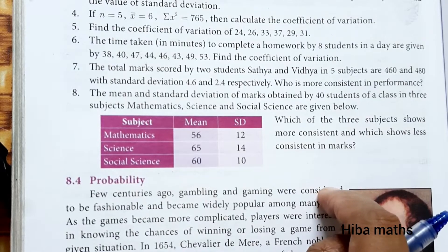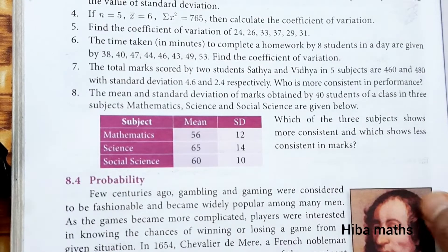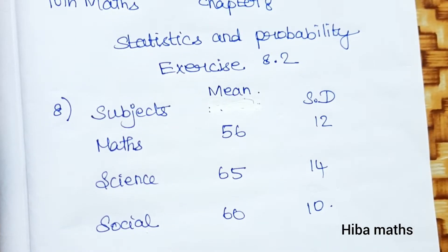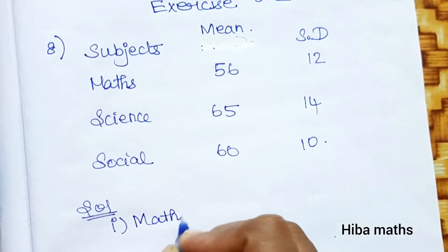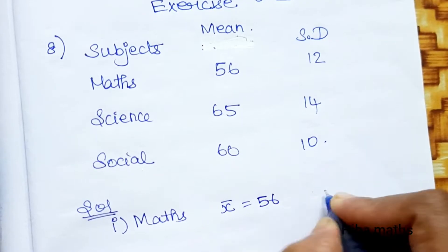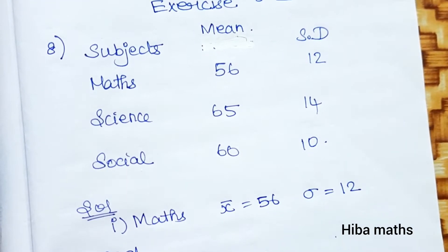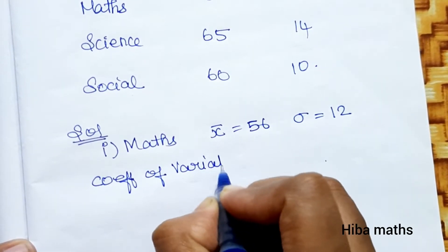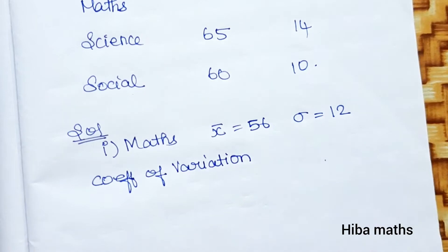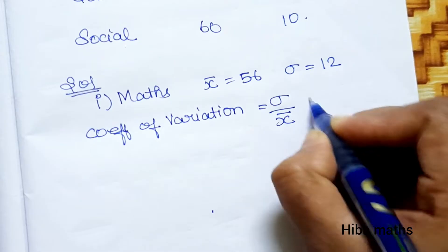To compare consistency, we use the Coefficient of Variation. Setting up the table with columns for subject, mean, and standard deviation. The formula for Coefficient of Variation is: standard deviation divided by mean, into 100 percent.